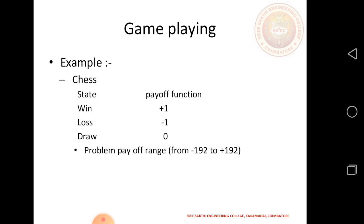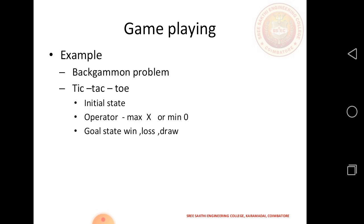The numerical values indicate the status of the states. For example, using a payoff function: win is plus 1, lose is minus 1, draw is 0. The payoff range can be from minus 1 to plus 1. Example: tic-tac-toe. Initial state, operator — maximum plays X or minimum plays O — and the goal state is win, lose, or draw.